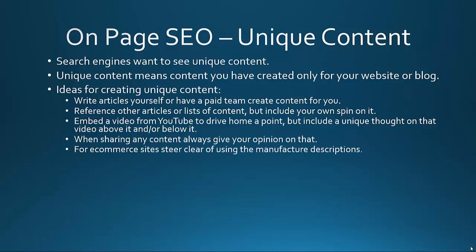For e-commerce sites, steer clear of using the manufacturer descriptions. Whether it's products you bought wholesale or products being drop-shipped from a supplier or the manufacturer, be very careful about just slapping on the manufacturer descriptions. Write a unique description. Write a unique story about that product — it's amazing how stories sell. Good quality copy and unique content will help you stand out from the pack, sell more, and ultimately increase your search engine rankings because you're adding something unique and fresh.